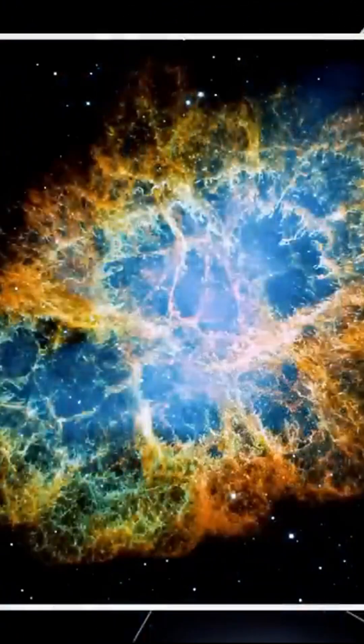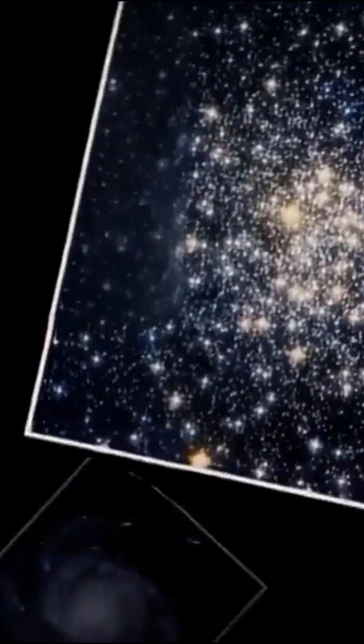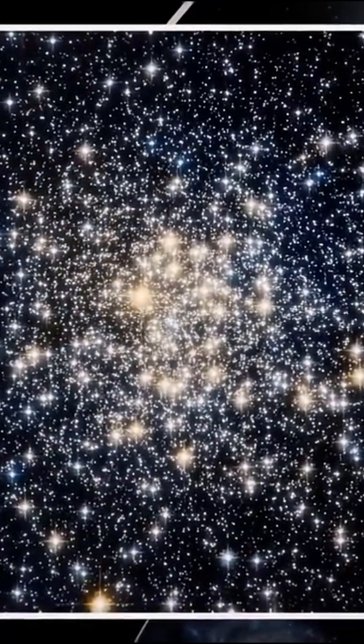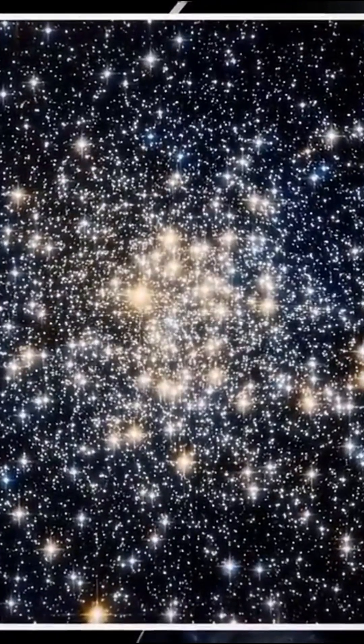The objects in Messier's catalog are marked with a capital M followed by a number ranging from one to a hundred.